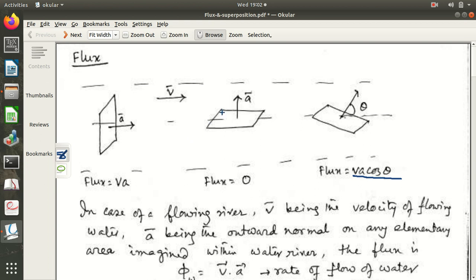If the plane is held, if the area is held parallel to the flow of motion, that means the area is perpendicular to V, the outward normal to the area, A, this A vector is perpendicular to V, then the flux is 0.